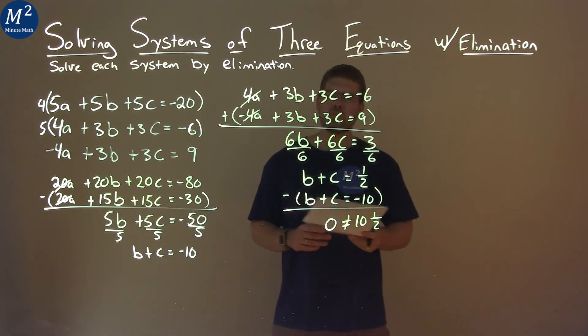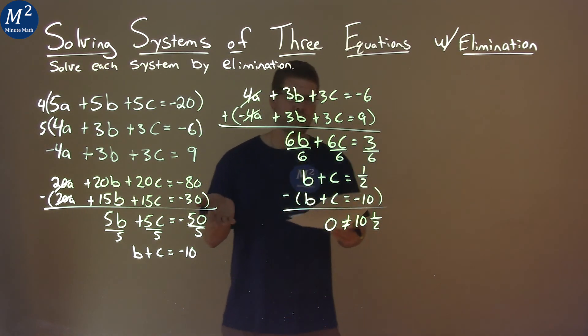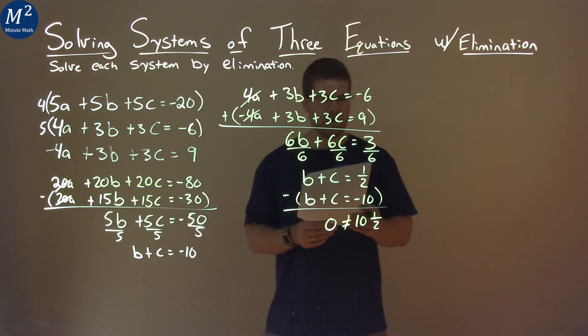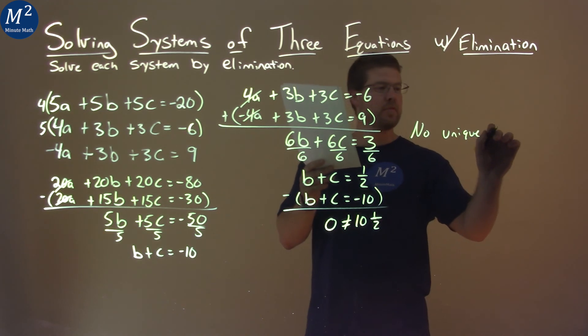What does 0 equal 10 and 1 half? Well, no. So it's a weird thing here. Two variables cancelled, and we got something that wasn't really true. So what does that mean?